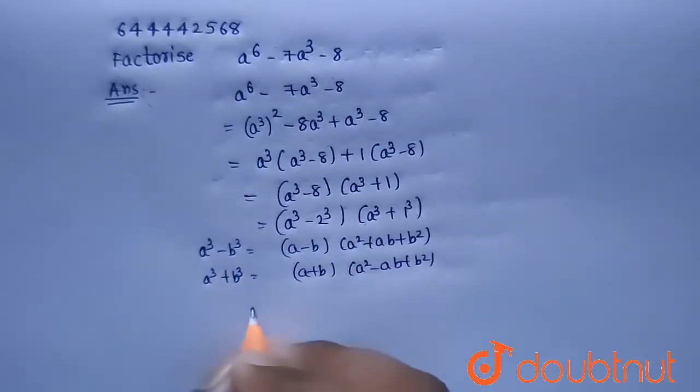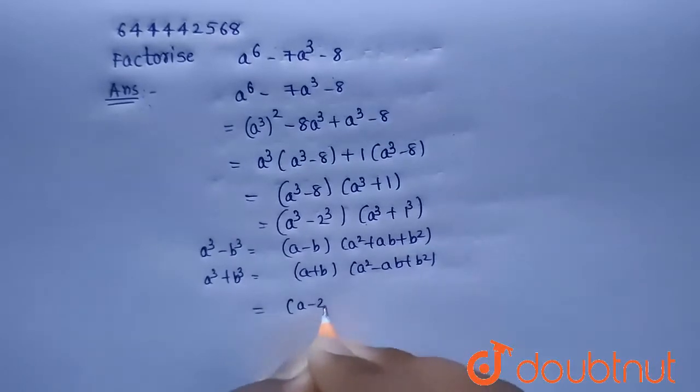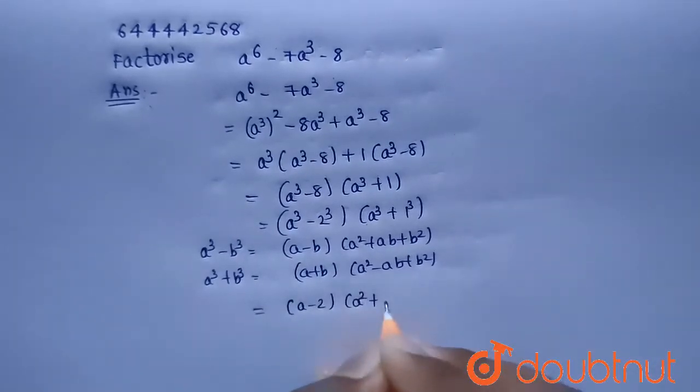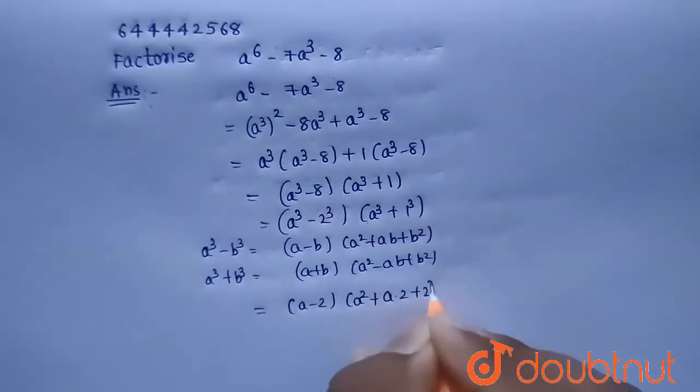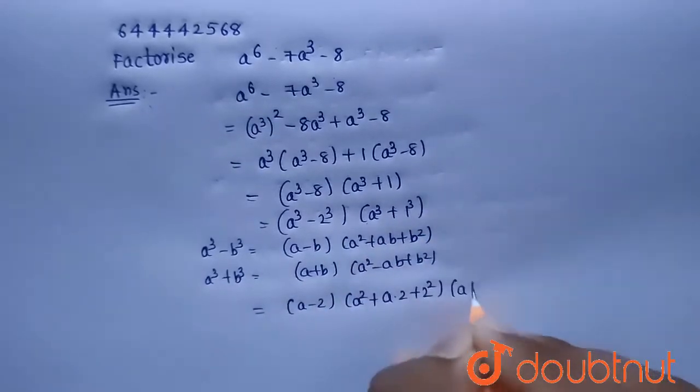Now let us use the first formula. So by using this first formula we can write this as (a minus 2) into (a^2 plus 2a plus 2^2).